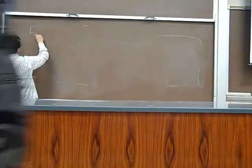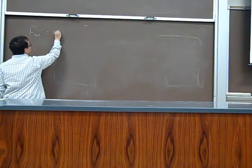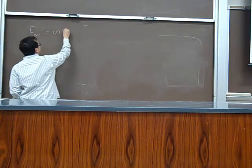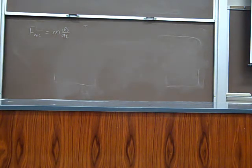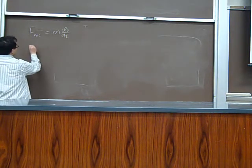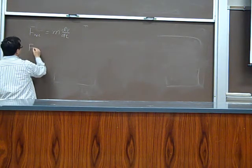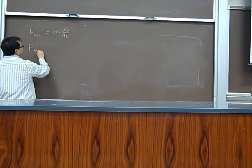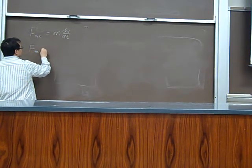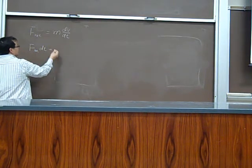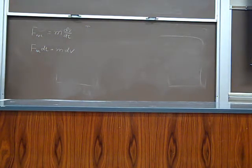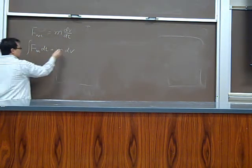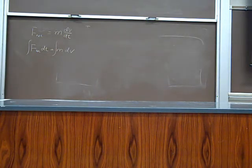So now let's start with Newton's second law. F net equals to MA which is M dv/dt. Now let's see what happens if we try to integrate both sides with time. We need to rearrange the equation as F net multiplied by dt equals to M dv. And then we integrate both sides.